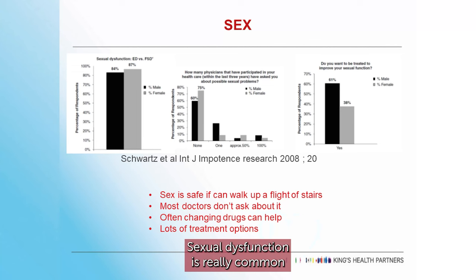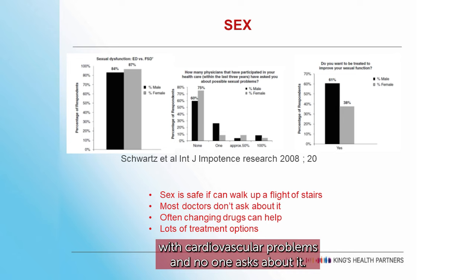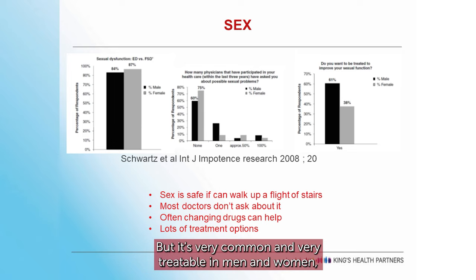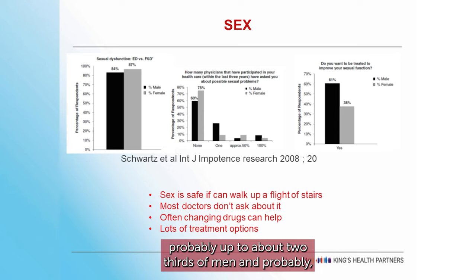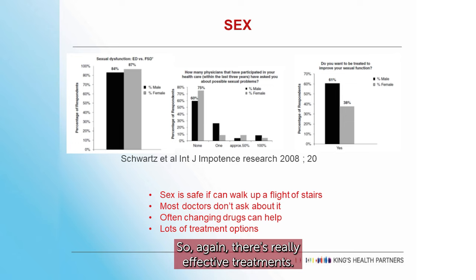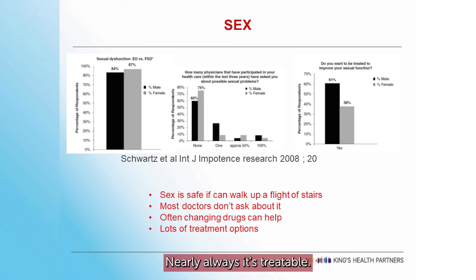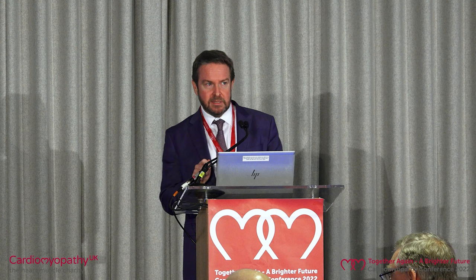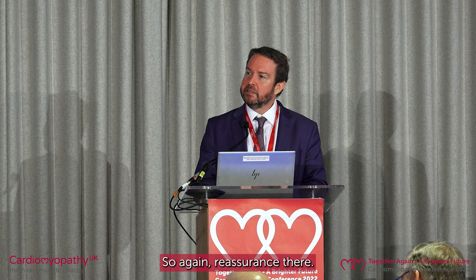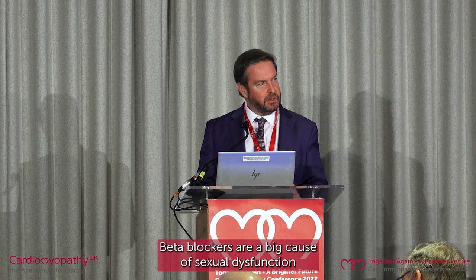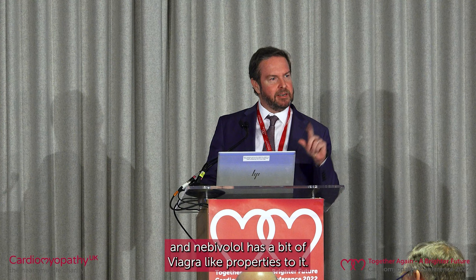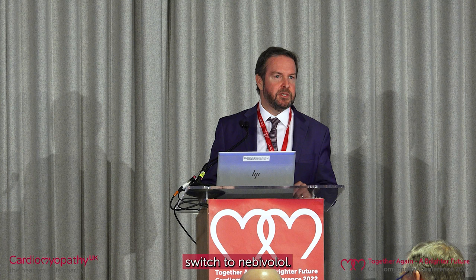Sexual dysfunction is really common with cardiovascular problems and no one asks about it — but it's very common and very treatable, in men and women. Probably up to two-thirds of men and up to 40% of women. It's often a vicious psychological spiral that once you fix it goes away dramatically. If you can walk a flight of stairs, sex is absolutely fine — reassurance there. Beta blockers are a big cause of sexual dysfunction; nebivolol has a bit of Viagra-like properties to it. If you're on ramipril or Entresto, switching to candesartan makes a big difference.